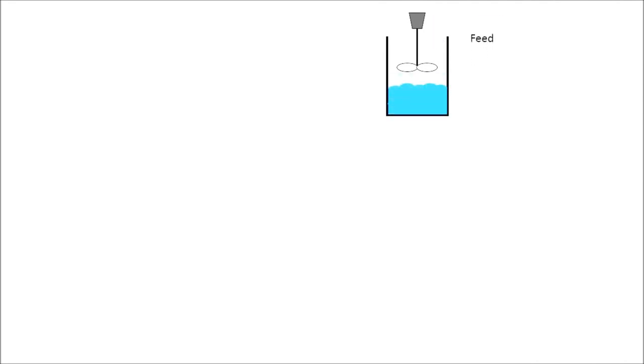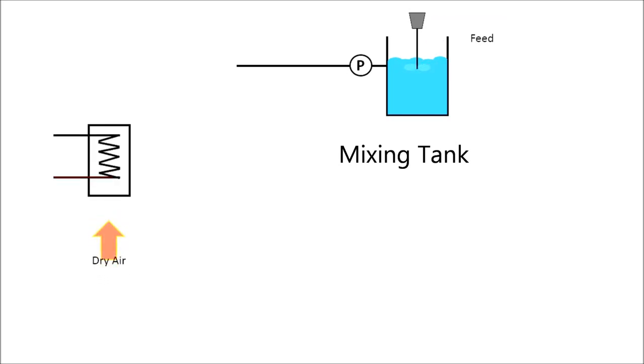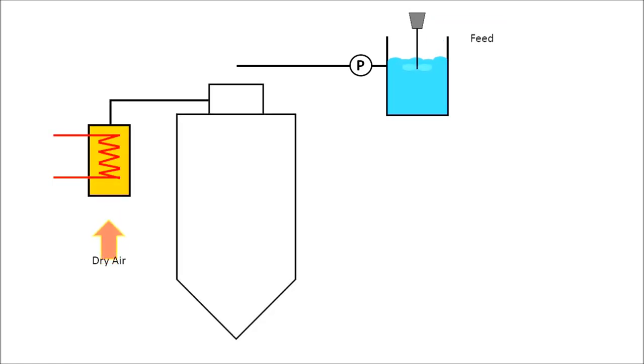Slurry from the mixing tank is introduced to the drying chamber through a rotary atomizer at the top. At the same time, dry air is heated to high temperature by heater. The heated air is then introduced through an air disperser which is mounted around the atomizer.